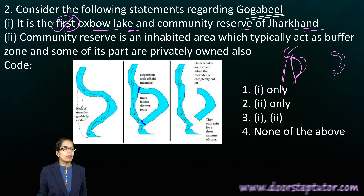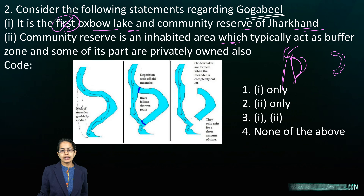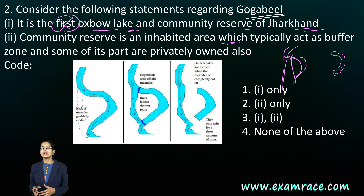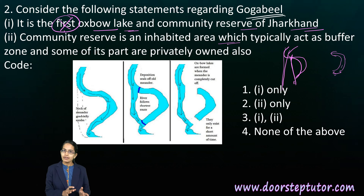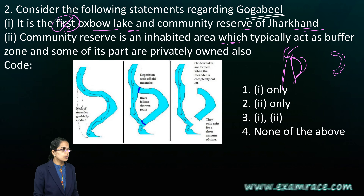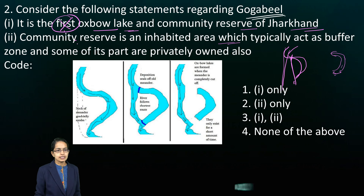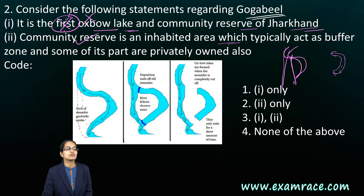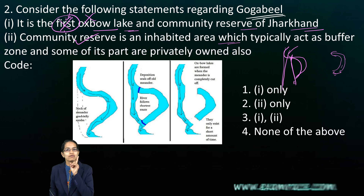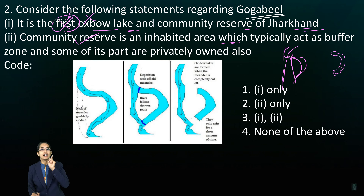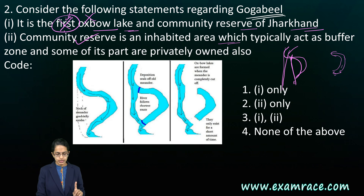A community reserve is an inhabited area which is a kind of buffer zone partially owned by a private company. The second statement is correct here, but the first statement is incorrect because of the usage of the word 'first.' Be very careful while answering your questions.